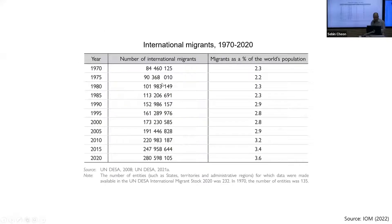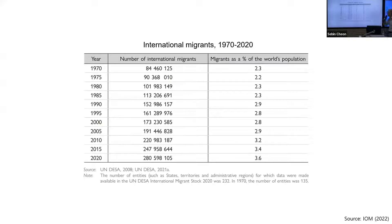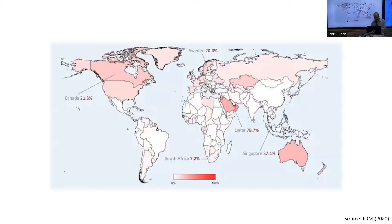Let me start with this table. This table shows the number of international migrants on the globe, and you can see a clear increasing pattern over the past several decades. The proportion of international migrants as a percentage of the total population was about 2.3% in 1970, but it's now more than 3.6% today. That means if we randomly select a group of 30 people from around the world, there is a high chance that at least one person is an international migrant.